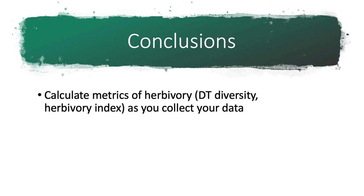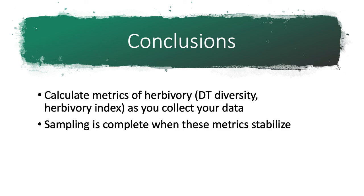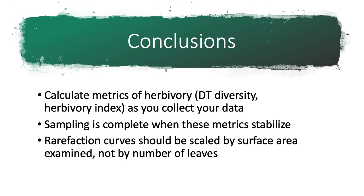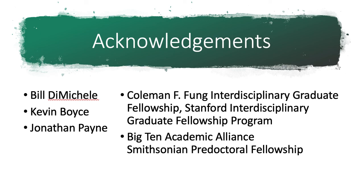In conclusion, it's best to calculate your metrics of insect herbivory as you collect your data, and your sampling is complete when these metrics stabilize. Rarefaction curves should be scaled by the amount of surface area examined, not by the number of leaves. With that, I'd like to thank Bill DeMichael, Kevin Boyce, and John Payne for their help on this project, as well as our funding sources. Thank you so much for tuning in.